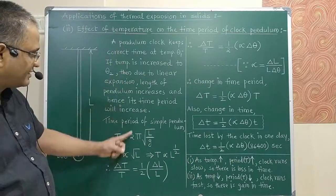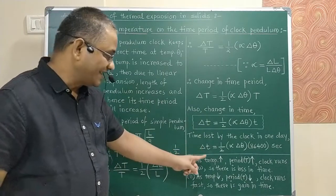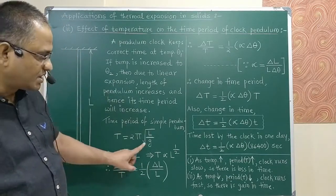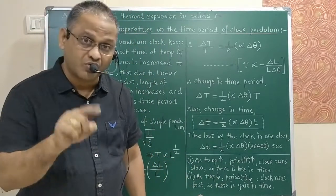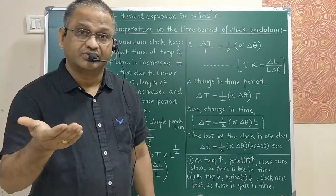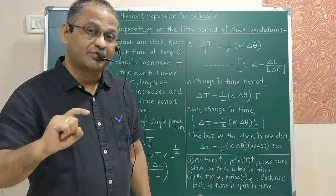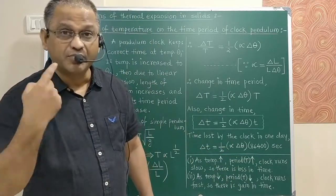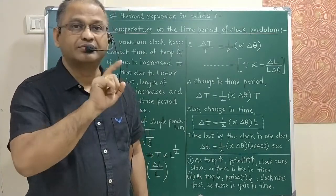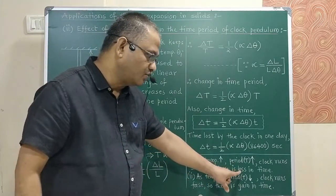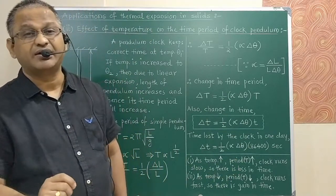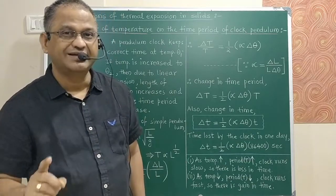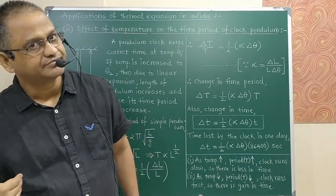If temperature increases, the length of the pendulum increases, so the time period increases. This means the clock requires more time to complete one oscillation, so the clock runs slow. If the clock runs slow, it loses time — meaning it falls behind the normal clock.